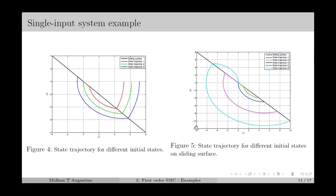The same situation is illustrated in figure 5, where we consider the state trajectory starting from the sliding surface itself. In most cases the magnitude of x2 is greater than 2.5, so the trajectory initially diverges from the sliding surface before starting to slide. However, in state trajectory 1 (shown in red), the magnitude of x2 is less than 2.5, so the state starts sliding from the initial time instant itself, which can be observed in the figure.